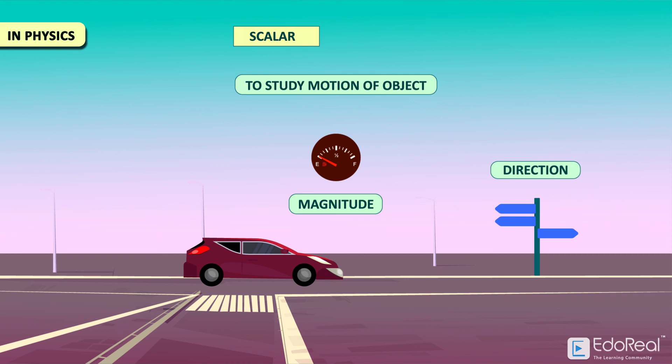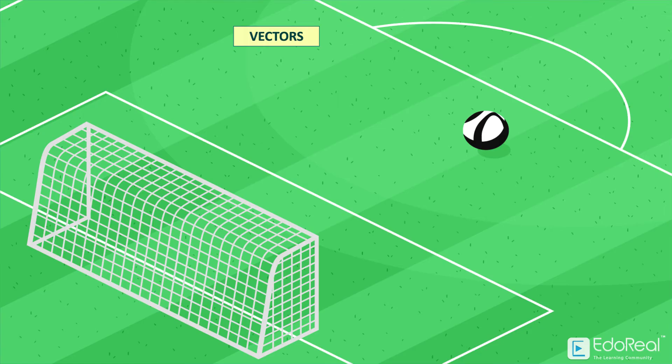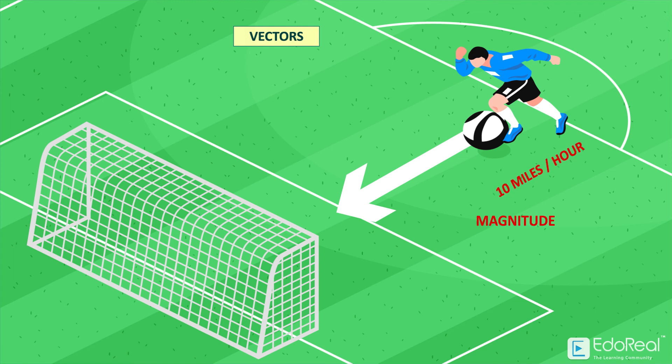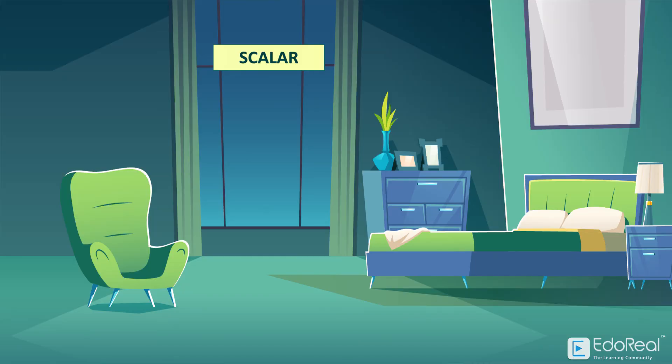On the other hand, a scalar is fully described by a magnitude only. For example, a football player running with a speed of 10 miles per hour towards the end zone. Here, 10 miles per hour is the magnitude, and towards the end zone is the direction. If we say the football player was running 10 miles an hour, then it is a scalar, since it has only magnitude. In the same way, the temperature of the room was 20 degrees Celsius. It is also a scalar.